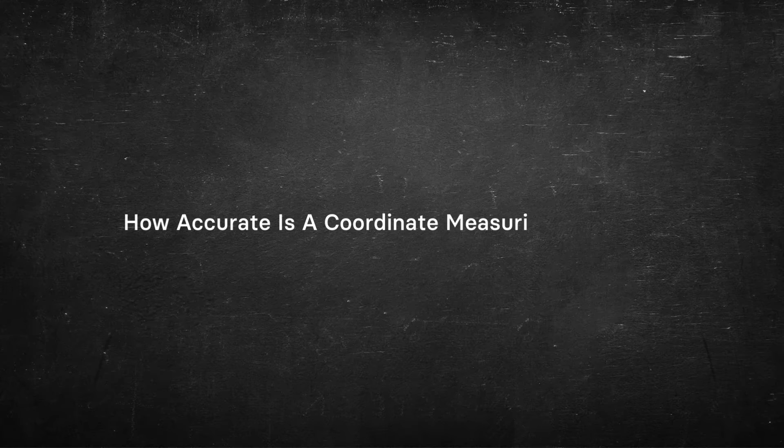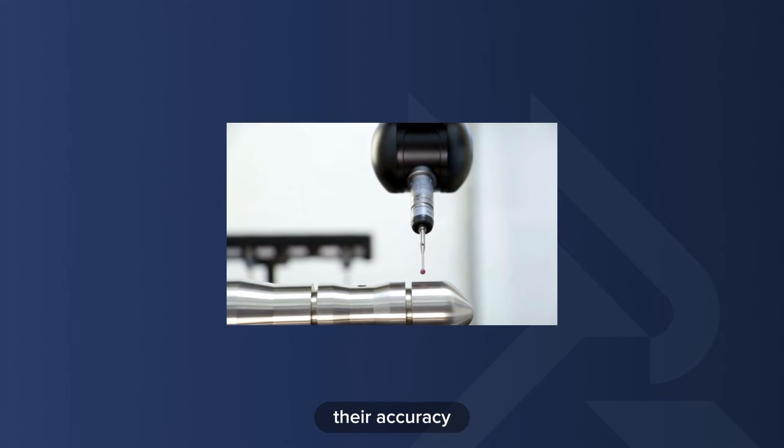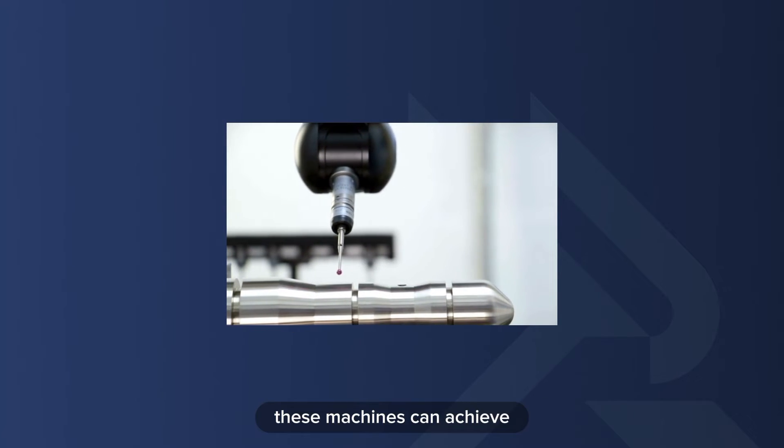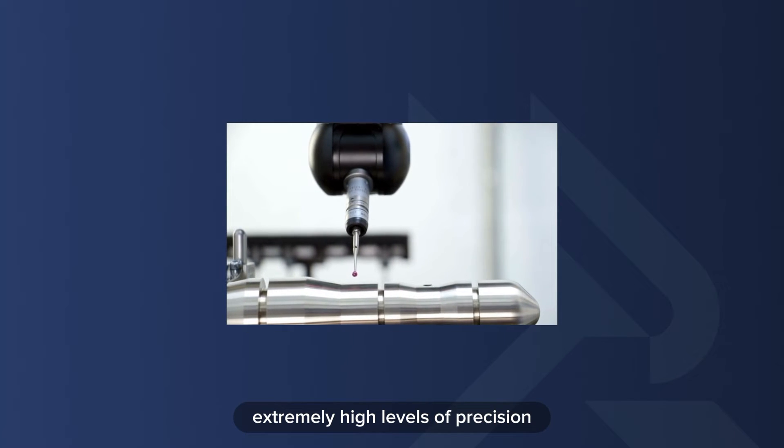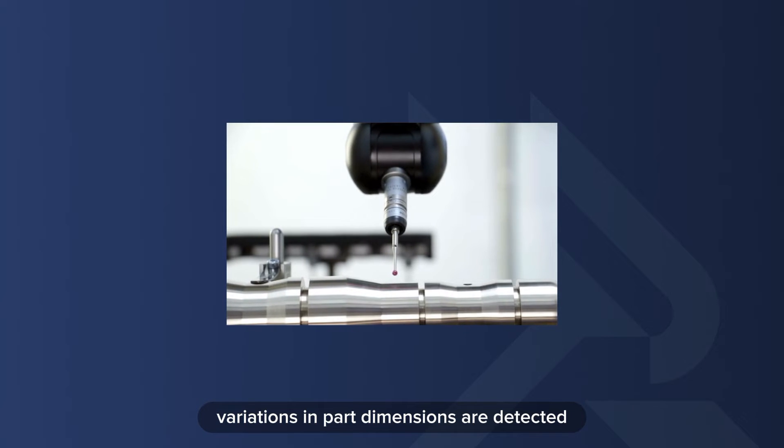How accurate is a coordinate measuring machine? CMM machines have varying accuracy. Their accuracy is typically measured in micrometers or microns. These machines can achieve extremely high levels of precision, ensuring that even the tiniest variations in part dimensions are detected.